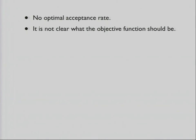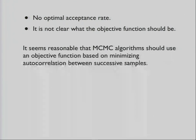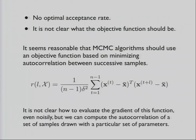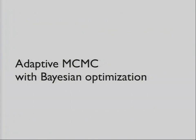Our setting was there's no optimal acceptance rate, and we're not even sure what to optimize. But we figured that it seems reasonable that MCMC algorithms should use something based on the autocorrelation function, because if you minimize this, then presumably you'd change the mixing fast. But it's not clear how to evaluate the gradient of this, although we can just draw some samples and then compute the autocorrelation.